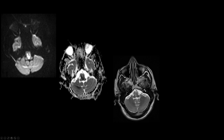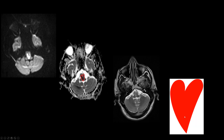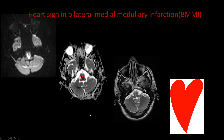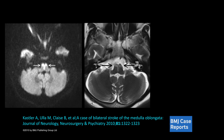Next case: hyperintense areas in the medulla, typically in the paramedian location, showing restricted diffusion on DWI and low signal on ADC. These are typically mimicking a heart — not an actual heart, but somewhat elongated. This is the classical heart sign seen in bilateral medial medullary infarction.